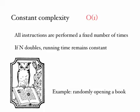it remains constant. So example, randomly opening a book. No matter how big the book is, it takes you exactly one move to open it at a random page. That is an algorithm of constant complexity. It's independent of the number of pages in the book.